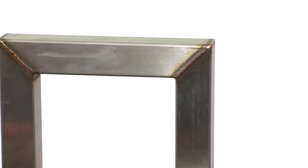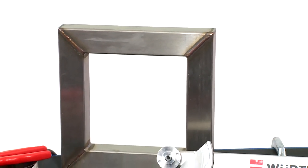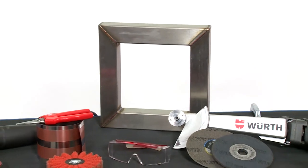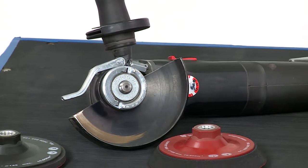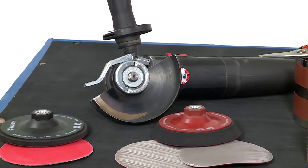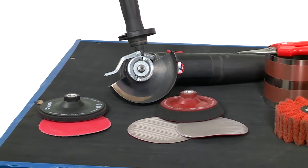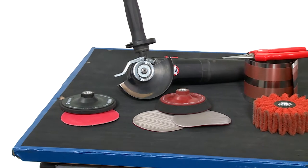Removing weld seams from square pipes requires finesse and know-how. For this, it is best to use the INOX Angle Sander with a hard black driving pad and the Velcro fabric disc with a ceramic grain K120.